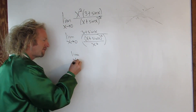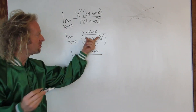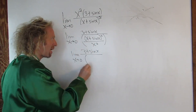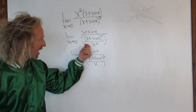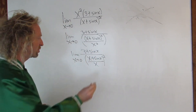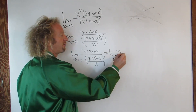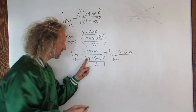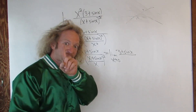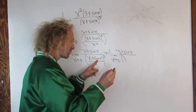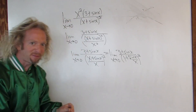Now we can combine these. This is 3 plus sine x over, and then you can take this and write it to the squared power, like this. So now you can break this up. This is the limit as x approaches 0 of 3 plus sine x over — and check this out — x over x is 1, sine x over x, and the whole denominator is squared. That's where the magic happens.